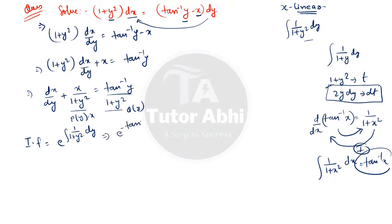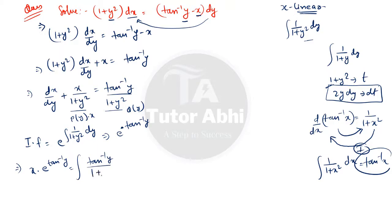Now applying the solution formula for a linear ODE: x · e^(tan⁻¹y) = ∫ Q(y) · e^(tan⁻¹y) dy. Here Q(y) = tan⁻¹y/(1 + y²), so we need to integrate tan⁻¹y/(1 + y²) · e^(tan⁻¹y) dy.